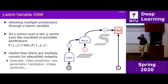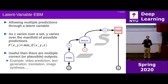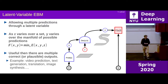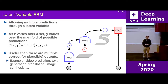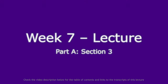Another example is translation. Language translation is a big problem because there is no single correct translation of a piece of text from one language to another — there are many ways to express the same idea. It might be nice to have some way of parametrizing all the possible translations a system could produce for a given text, say German to English, where multiple English translations are all correct. By varying some latent variable, you could vary the translation produced.